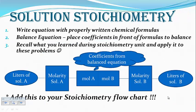Now, solution stoichiometry. This is where you're going to make some changes to your stoichiometry flowchart — we have not added this in yet, so you will want to do that now. Just like other stoichiometry problems, you need to write properly balanced formulas and equations, and then apply what you learned last unit. For instance, if we need to go from liters of solution A to liters of solution B: use molarity to convert liters of A to moles of A, then use the balanced equation to go from moles of A to moles of B, and then use molarity to convert moles of B to liters of solution B.